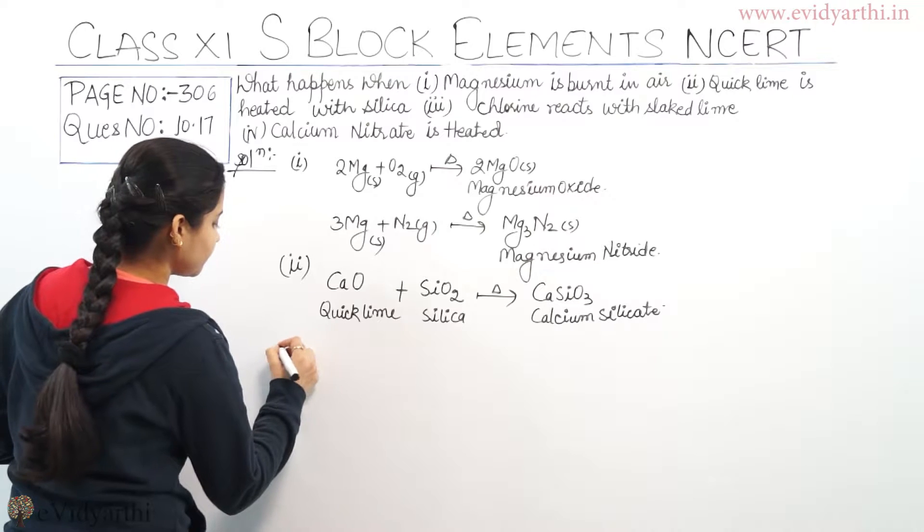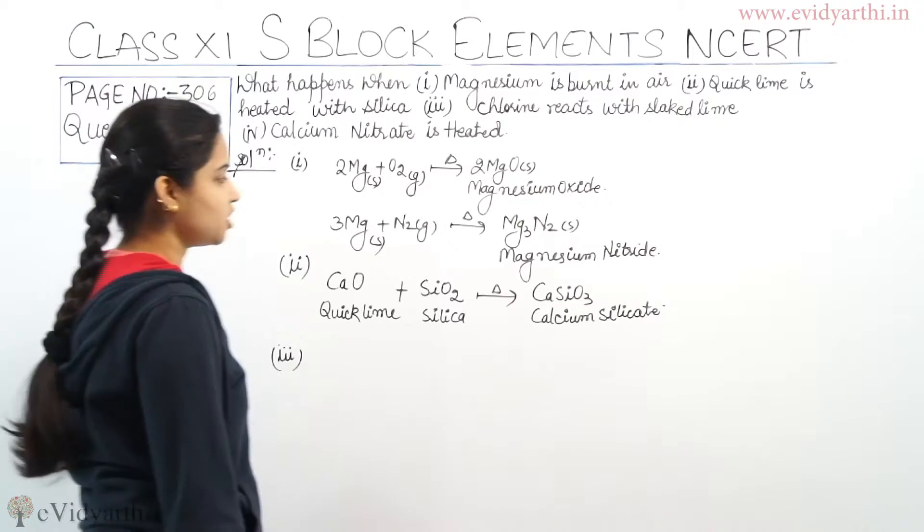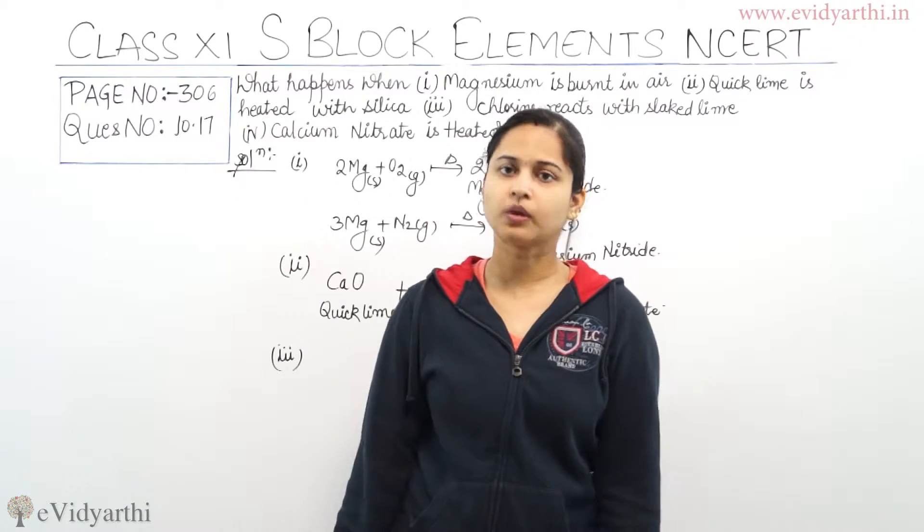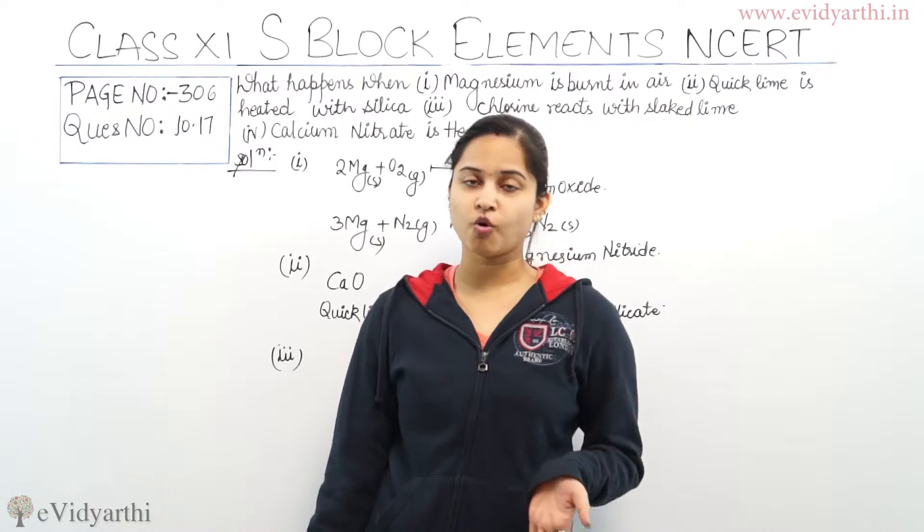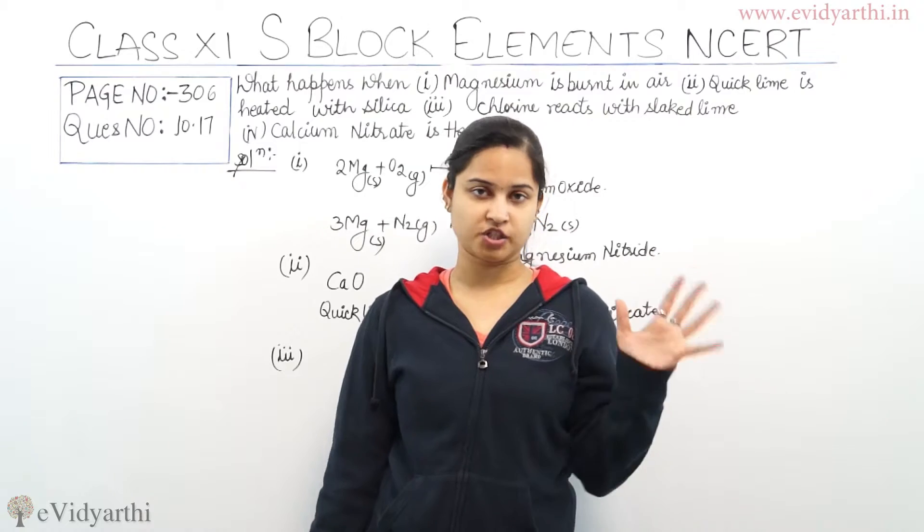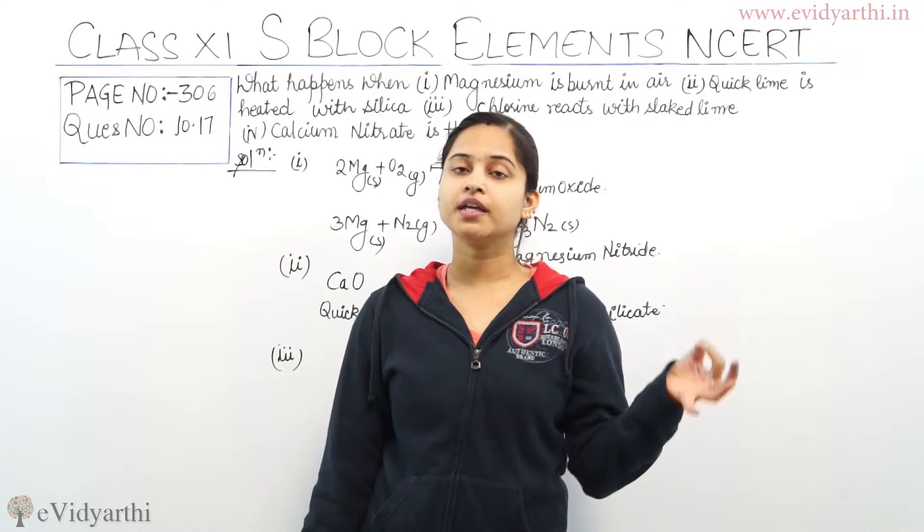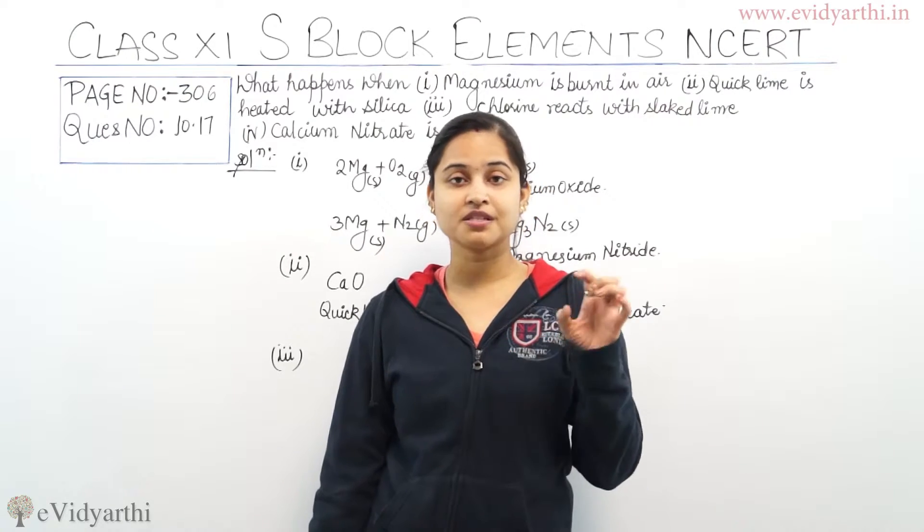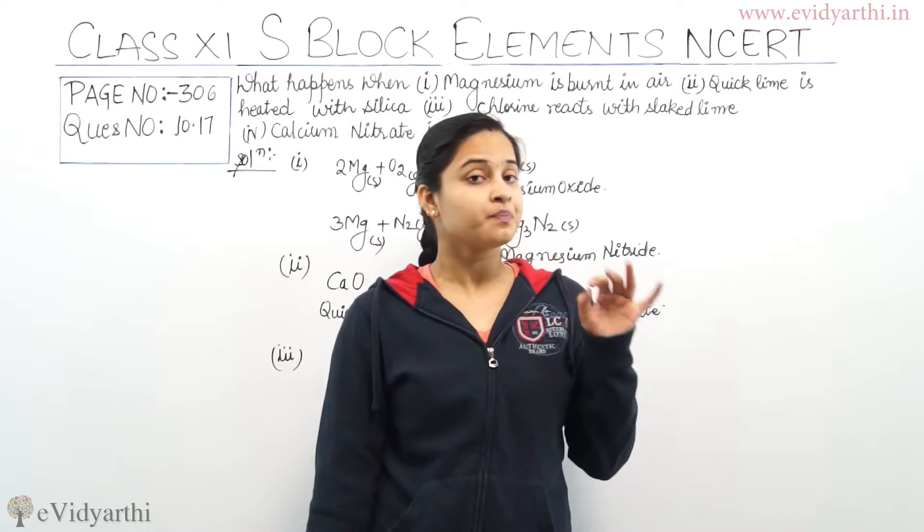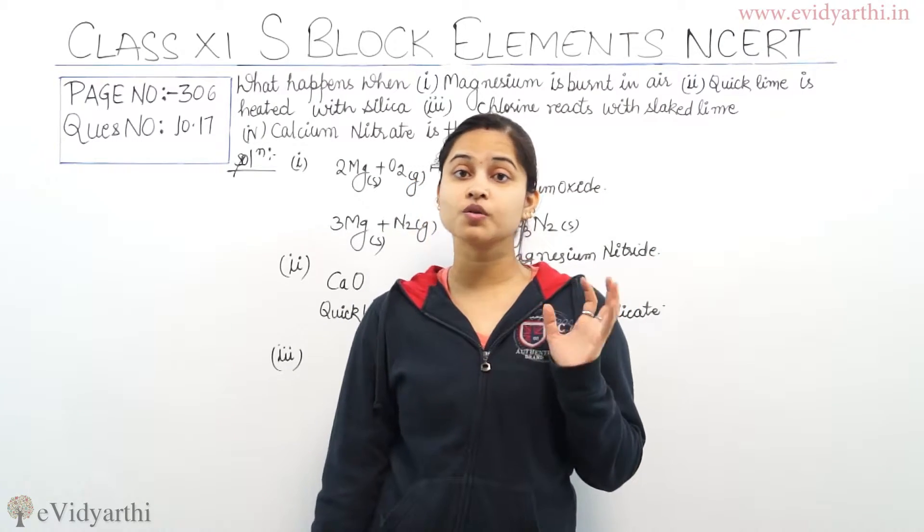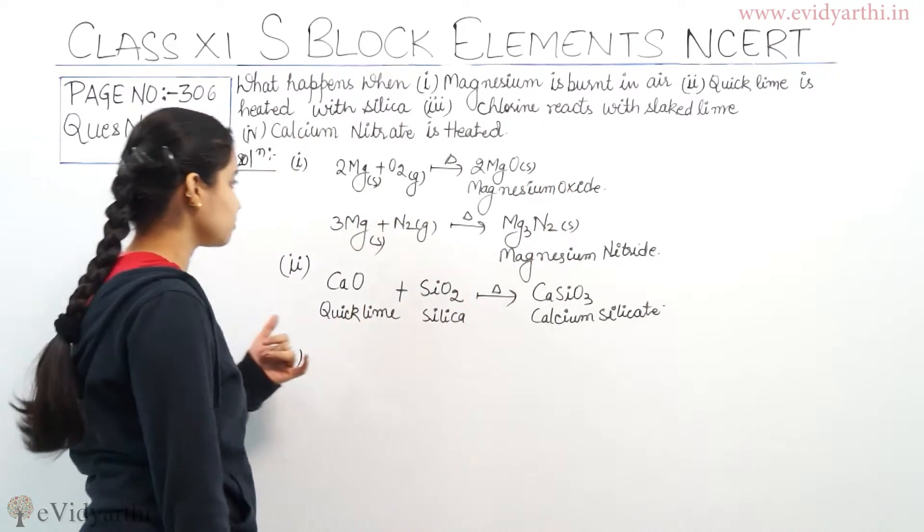Third part: chlorine reacts with slaked lime. What is slaked lime? Slaked lime is calcium hydroxide, Ca(OH)2. When this calcium hydroxide is reacted with chlorine, we get calcium hypochlorite. This calcium hypochlorite is a constituent of bleaching powder. Take care, please remember this one.